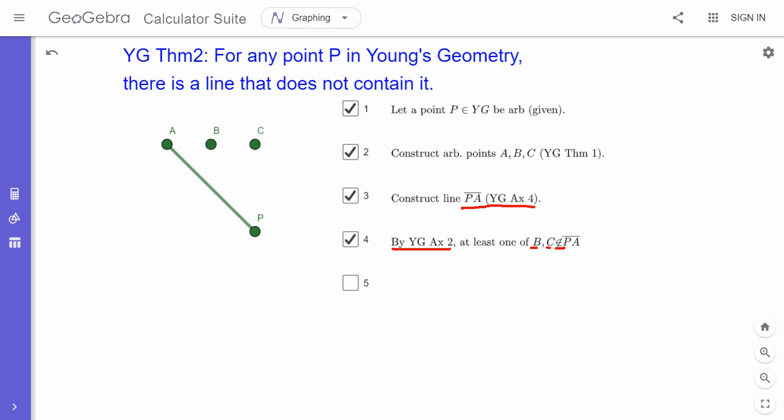So you can do this either way. You can do the parentheses at the end to state your justification. In theorem proving, that's also called a warrant, right? It's the warrant that certifies the statement is true. And I don't mind if I tend to do this a lot, but it's perfectly legitimate to say by Young's geometry axiom 2, this must be true.